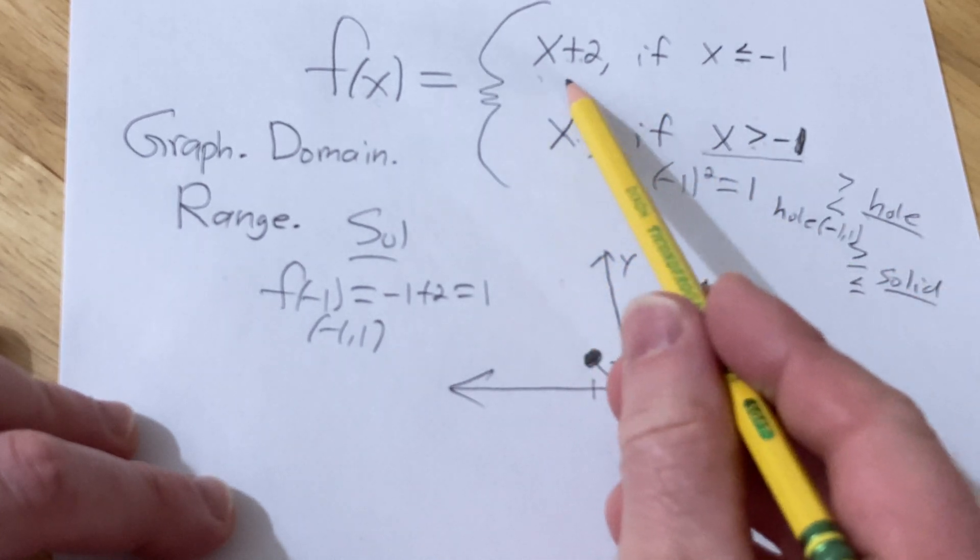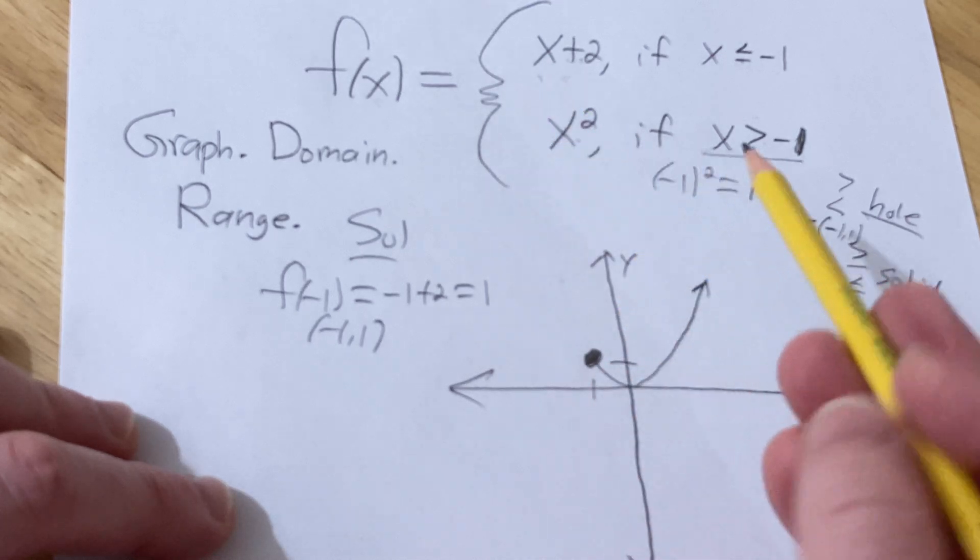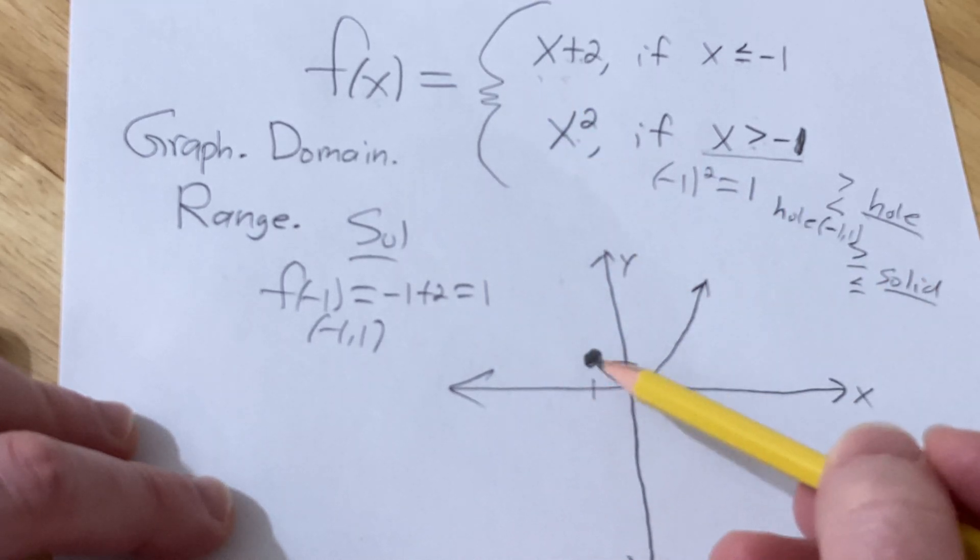As for the rest of this graph, we know it has a positive slope, so it's going to look something like this.